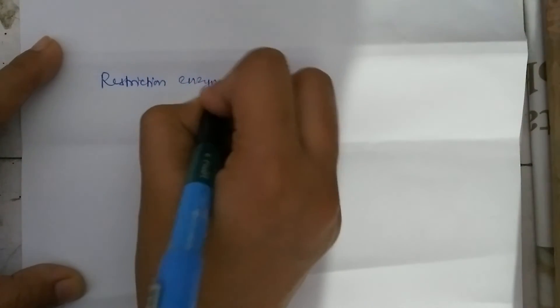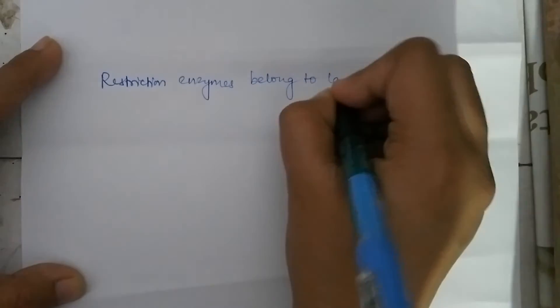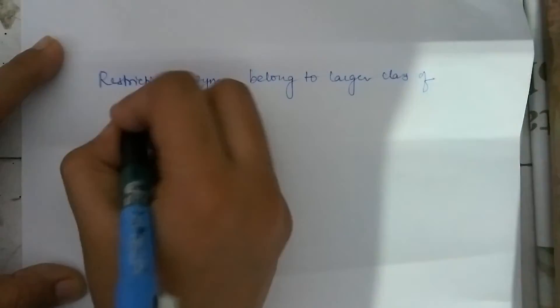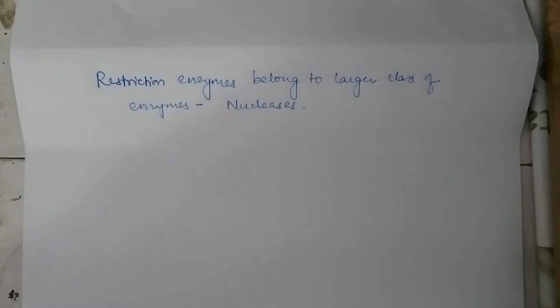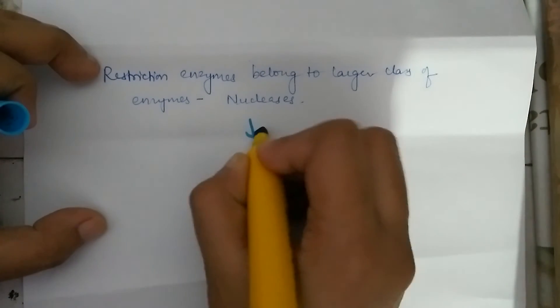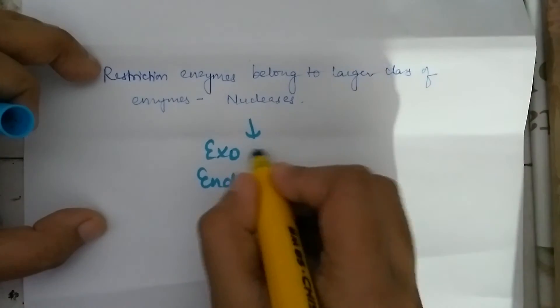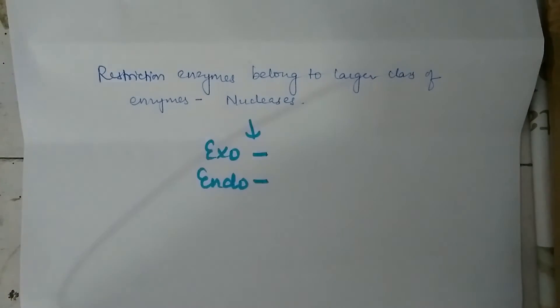Restriction enzymes belong to a larger class of enzymes called nucleases, and these are of two kinds: exonucleases and endonucleases. Exonucleases remove nucleotides from the ends of the DNA helix, whereas endonucleases may cut at specific positions within the DNA.